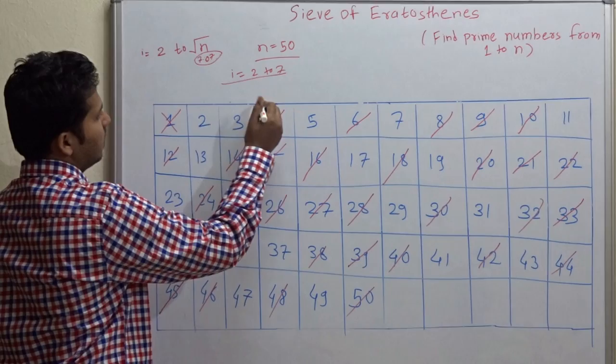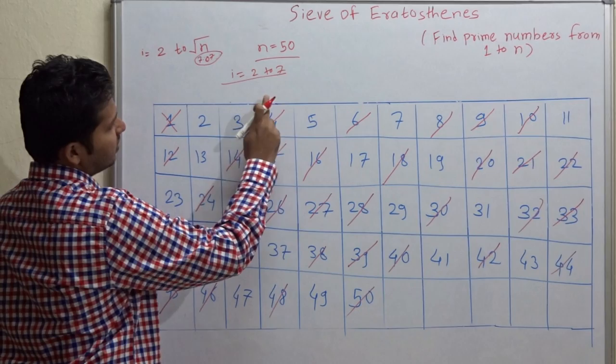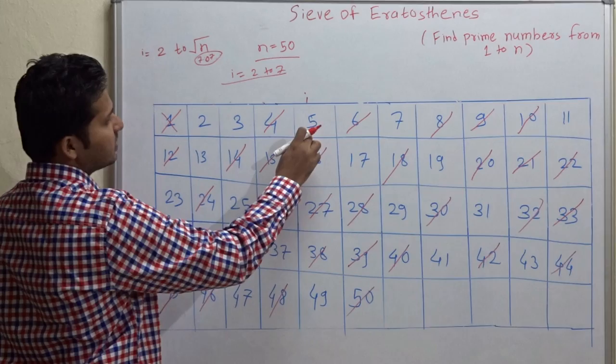Now just let us increment i. As this number is already cancelled, this number is already cancelled, we increment i. This number is not cancelled means this is a prime number.